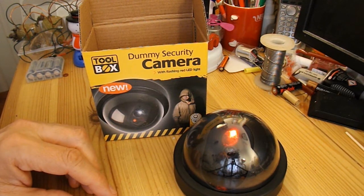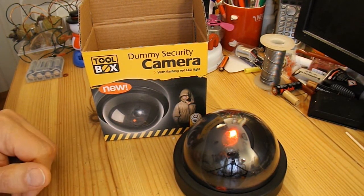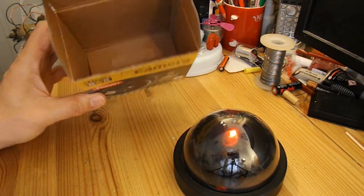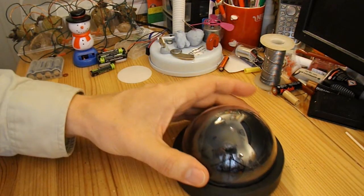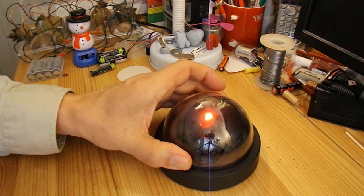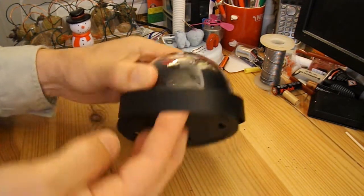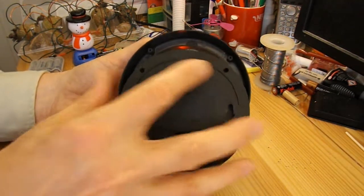But I thought I'd just do a very quick disassembly video just to show you what's inside, which isn't much. So it comes in a box. I've already switched it on, put the batteries in it. In fact I've already taken the screws out, but it has four screws in it.